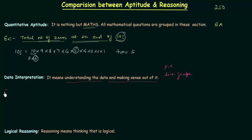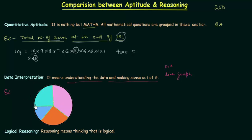We will see one example. I will take one pie chart for this purpose. This is the pie chart for human body composition. I have divided this pie chart into 10 equal parts: 4 by 10 is for hormones, enzymes and proteins, 3 by 10 is for muscles, 2 by 10 is for bones, and finally 1 by 10 is for skin.